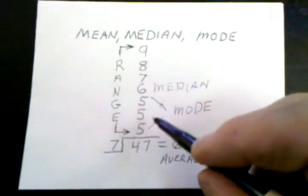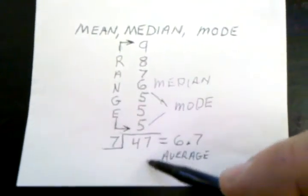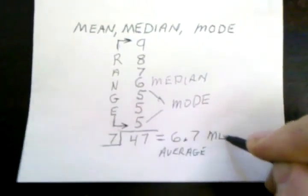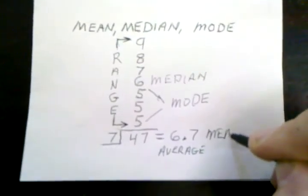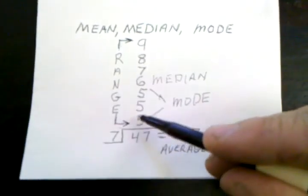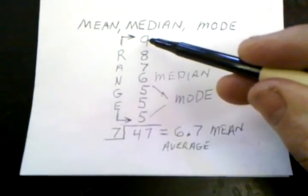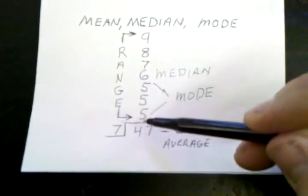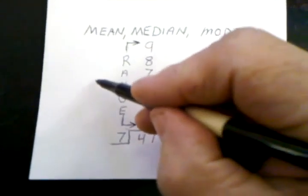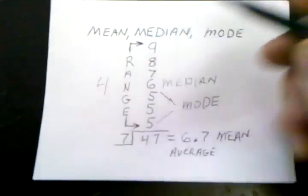When you're talking about the mean, it's basically all your numbers added up and averaged. The range in this group of numbers would be the span between 9 and the smallest number. In this case, if you subtract the group, it would be 4.